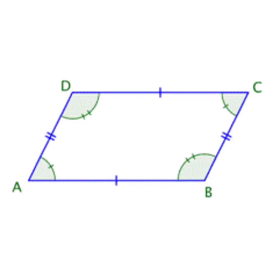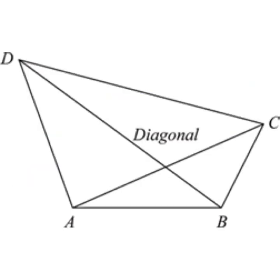Now we will move on to the diagonals. Before knowing the diagonals of a quadrilateral, we need to revise what diagonals are. Diagonals connect vertices which are not adjacent — that means not next to each other. In quadrilateral ABCD, AC and BD are the 2 diagonals.